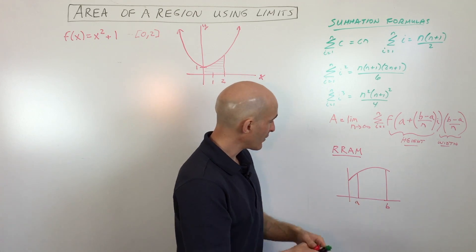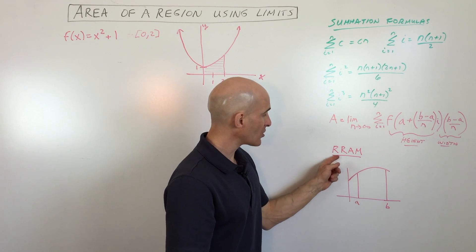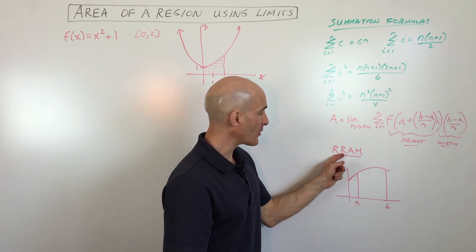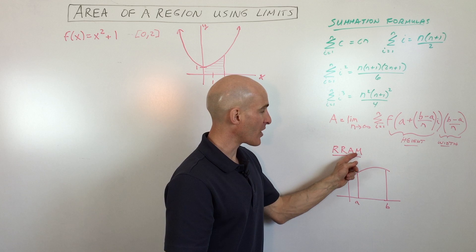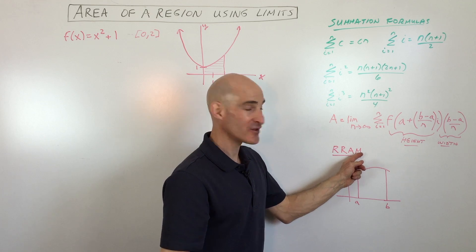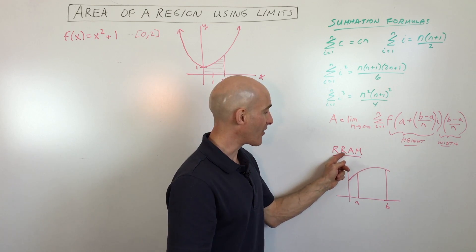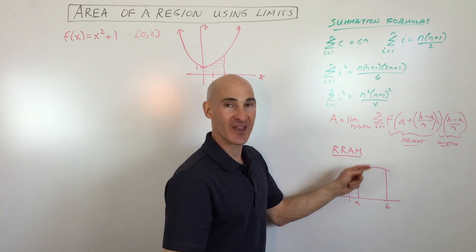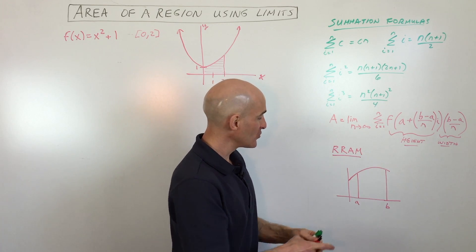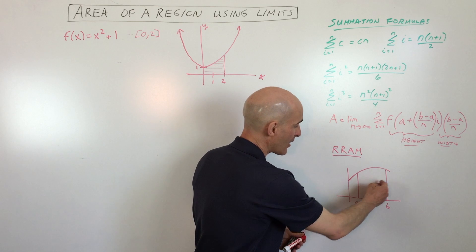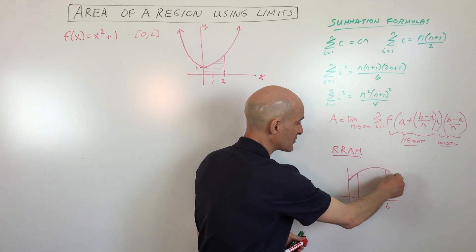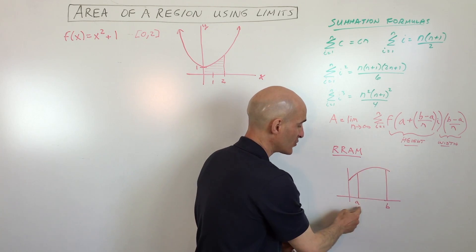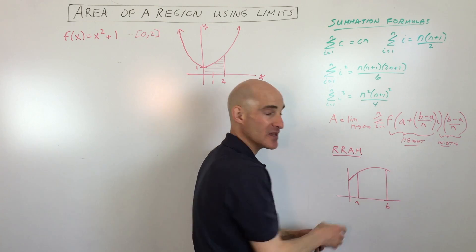I have a little sample over here. Sometimes this is called the right rectangular approximation method, or the RRAM. What we're going to do is find the area underneath this curve between A and B.